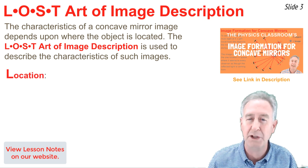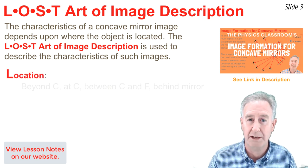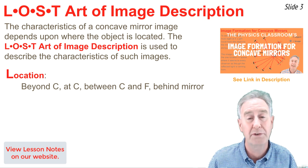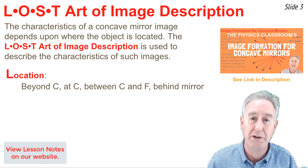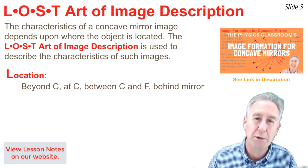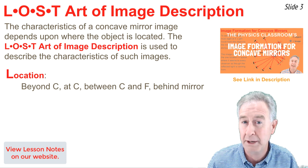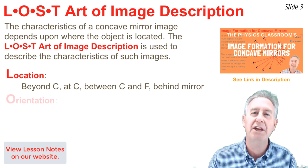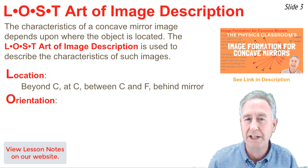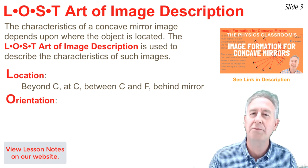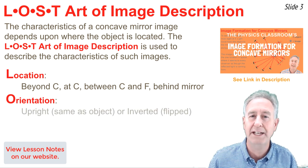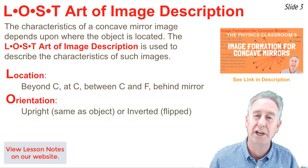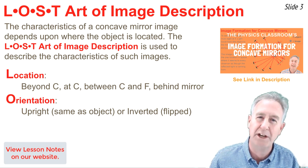The L of LOST stands for the location of the image — we describe it relative to major points along the principal axis, such as beyond C, between the focal point and the mirror, or on the opposite side of the mirror. The O of LOST stands for the orientation of the image: whether it's inverted (flipped upside down) or upright (not flipped over).